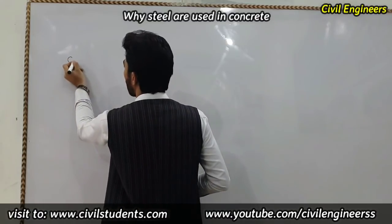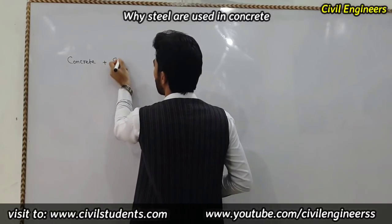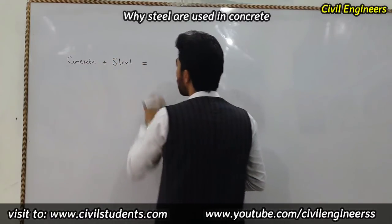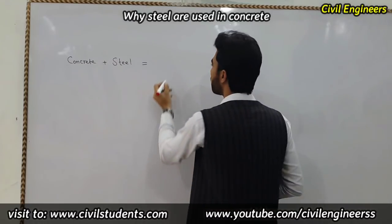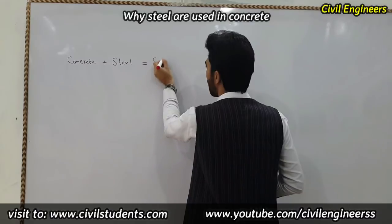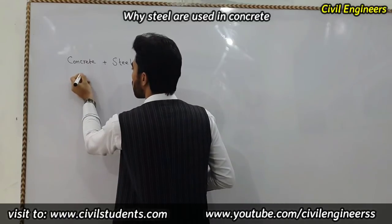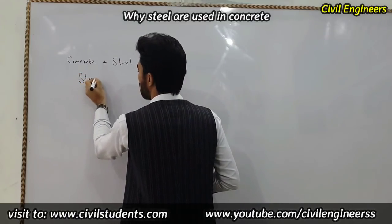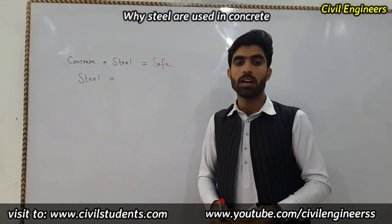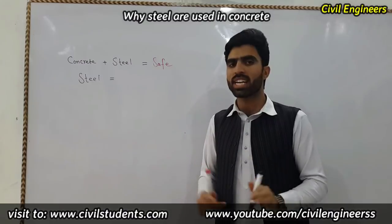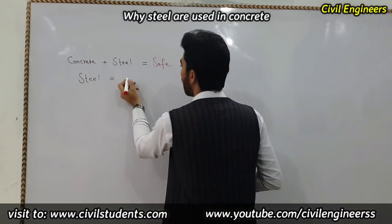Concrete plus steel equals a safe structure. Steel is too much strong, but it's also too much expensive, so we can't use only steel in construction work. Steel equals expensive.